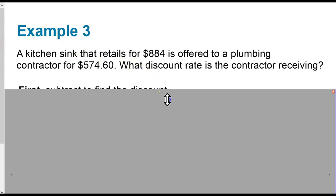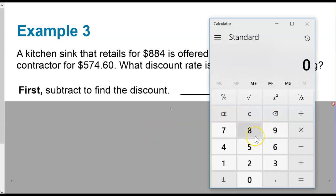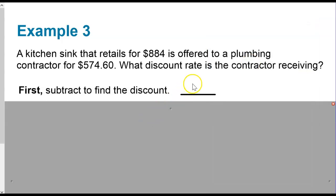Okay, we're back. And let's go ahead and look at this. So first, you want to make sure to subtract to find what is the discount itself. So if it's originally $884 and he's getting it for $574.60, let's do the math on this. $884 minus $574.60. Minus $309.40. Very nice discount, huh?